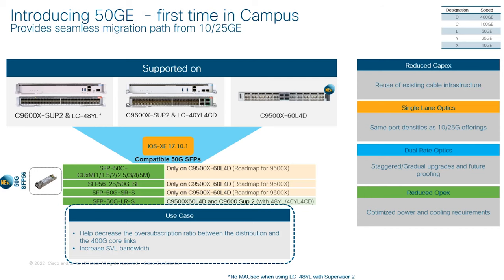First, 17.10 introduces an industry first of 50 gig speeds, which is also the first time in campus, on the Silicon One core platforms, namely the Catalyst 9600X Super 2 and the Catalyst 9500X with their line cards. This provides a seamless migration path from the 10 and 25 gig speeds that have been supported.